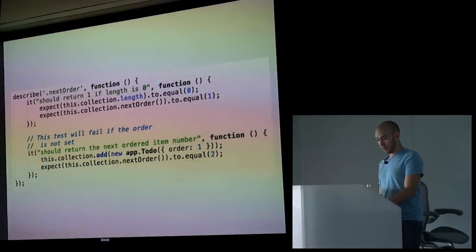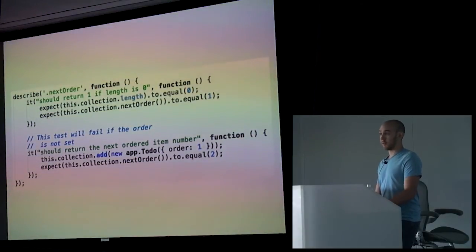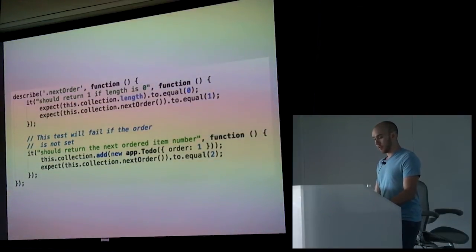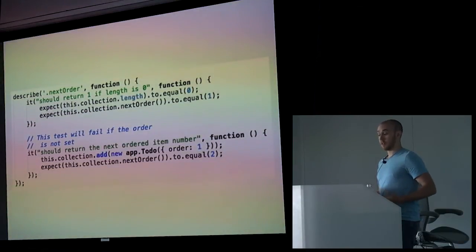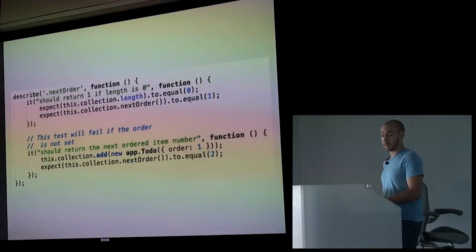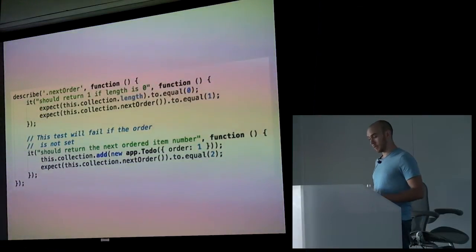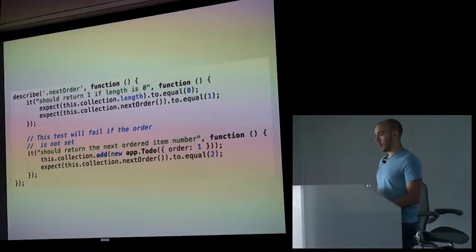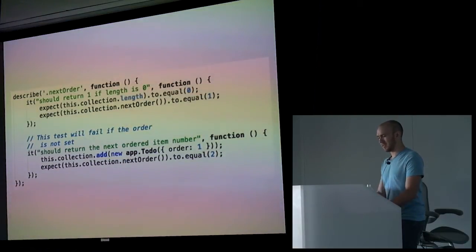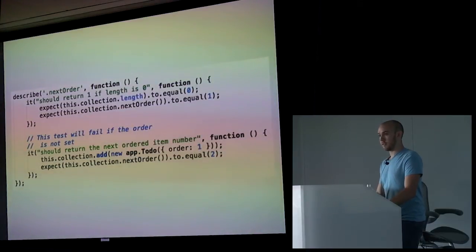Let's take a look at one more complicated example. We have the nextOrder method. I actually discovered a bug here in TodoMVC because I ran tests on it. In the first one, we should return one if the length is zero. We want to test to make sure that the collection is actually of length zero and then test the method. In the second one, I actually had to set order to one by default to test this method on its own - otherwise it does break, returning NaN or something. Bonus points to whoever goes and fixes that in TodoMVC.